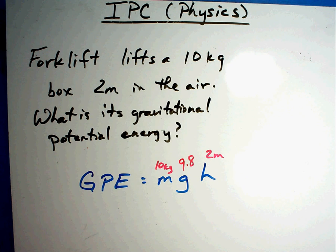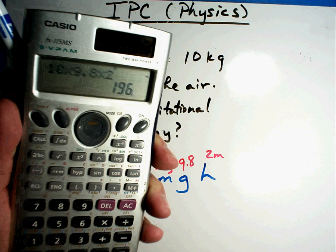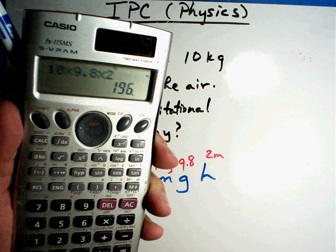Well, I've got all my numbers. All I need to do is multiply them. So, 10 times 9.8 times 2 equals, the answer I get? 196.